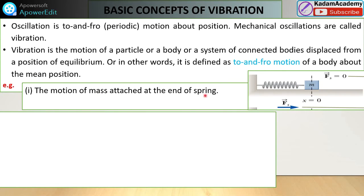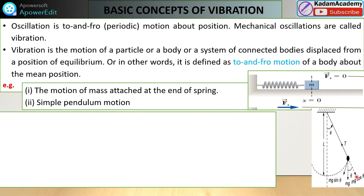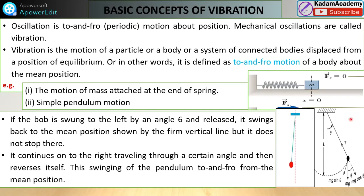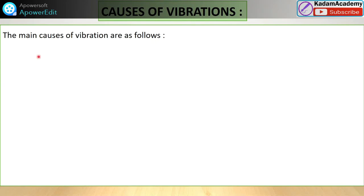Similarly, consider the simple pendulum. A bob is attached to a string and displaced by an angle theta. The bob is swung to the left at 60 degrees and released — it rotates back and forth, traveling to a certain angle then reversing. The swinging of the pendulum to and fro from the mean position (the red line) is oscillation or vibration. This is the basic concept — always keep it in mind.